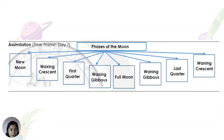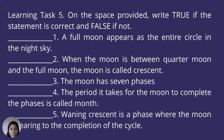To summarize our lesson today about the phases of the moon: the phases are new moon, waxing crescent, first quarter, waxing gibbous, full moon, waning gibbous, last quarter, and waning crescent.